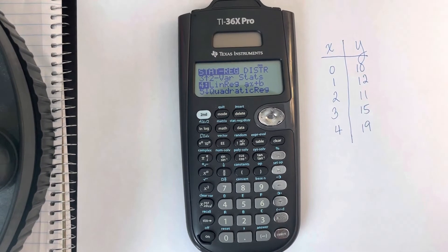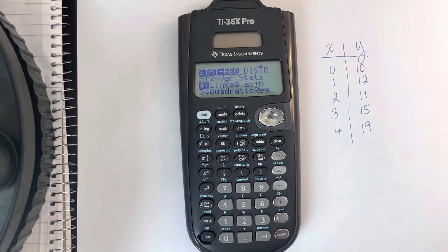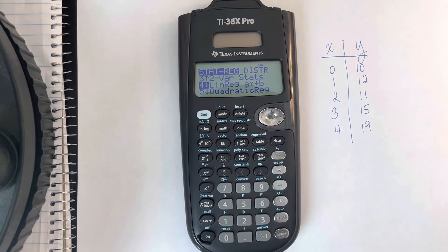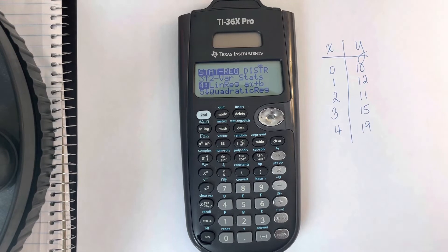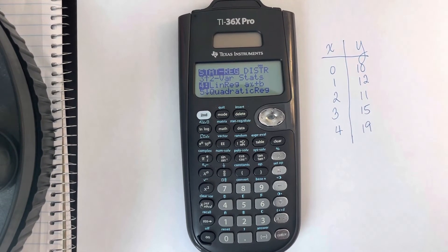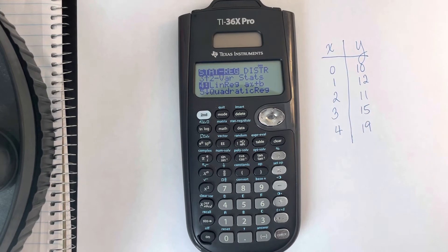A word of caution, the TI-36X Pro does not have a Linear Regression A plus BX option like the TI-83 and 84 does. It is the same command, it's just treating what A and B stand for in the opposite way.